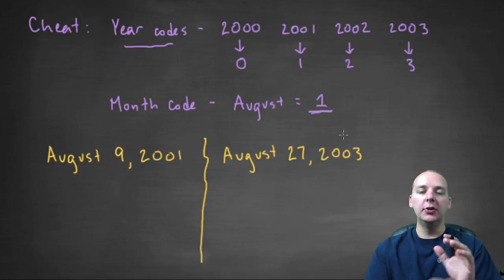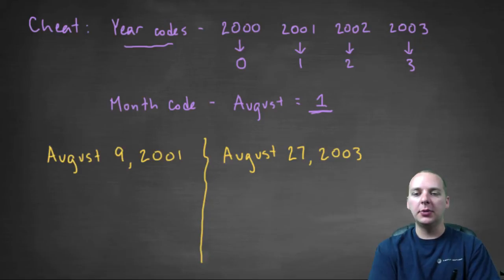Okay, so let's use what we just learned, along with this little bit of knowledge that we're cheating with here, to find out what day of the week these two completely random days in history were. August 9th, 2001.